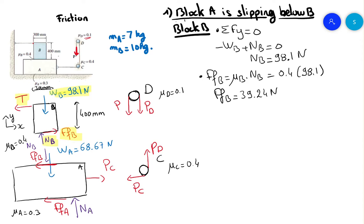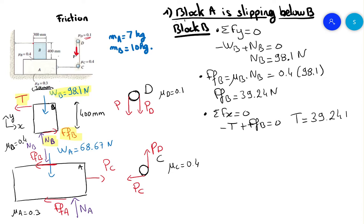Third equation: sum of forces on X equals 0 on block B. We have minus T plus FFB equals 0, so T equals 39.24 N. First possibility: T equals 39.24 N.